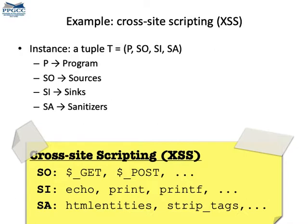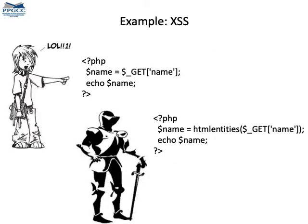There are many examples of tainted flow vulnerabilities — I'll provide six here. The first is called a cross-site scripting attack, which is the example with the echo function where we could steal a cookie. You can see examples of sources, sinks, and sanitizers in the yellow box. The program on the top is vulnerable — that's the program we already saw as our first example. The program on the bottom is the safe version.